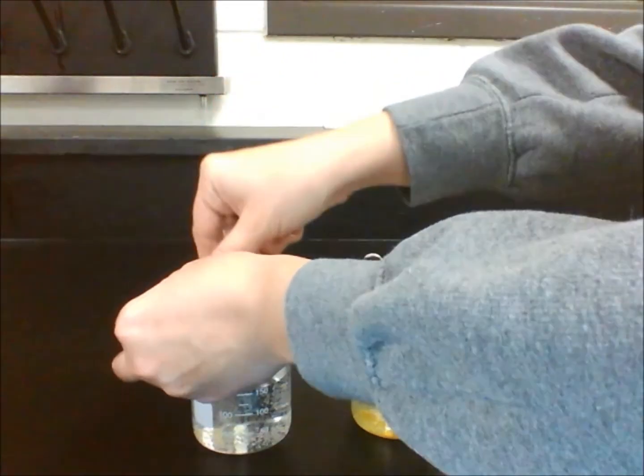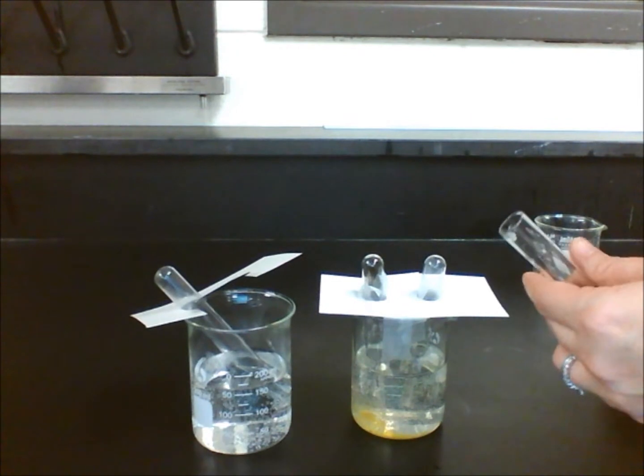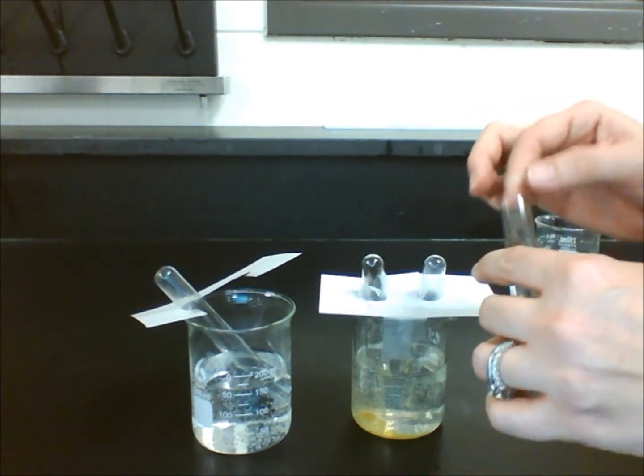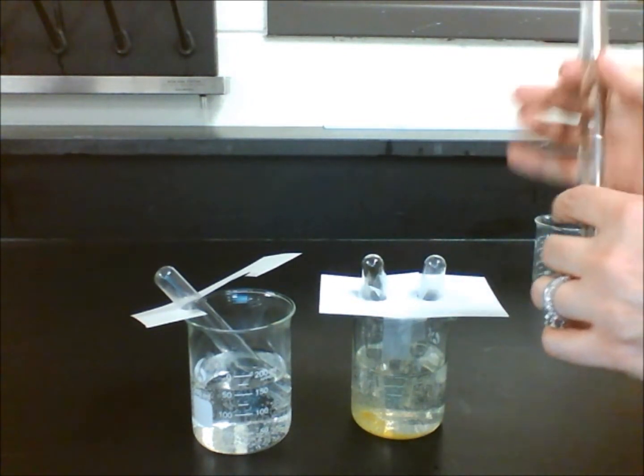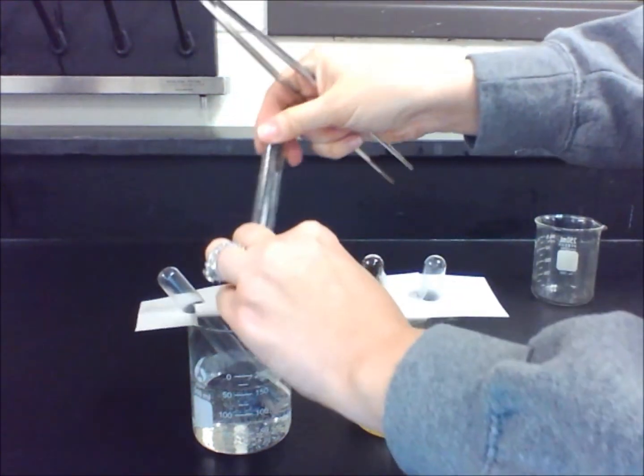Invert one test tube in the water, making sure the open end is on the bottom. We then place a damp piece of steel wool in the test tube, and then invert it as well in the beaker.